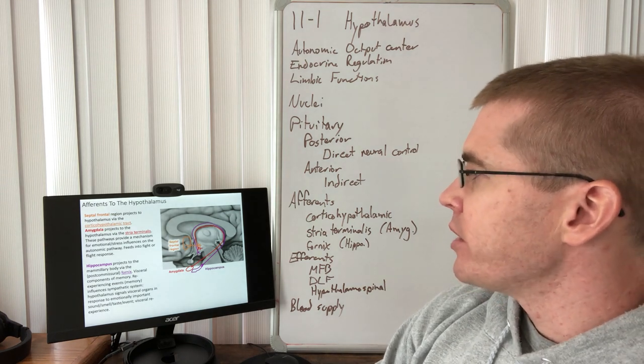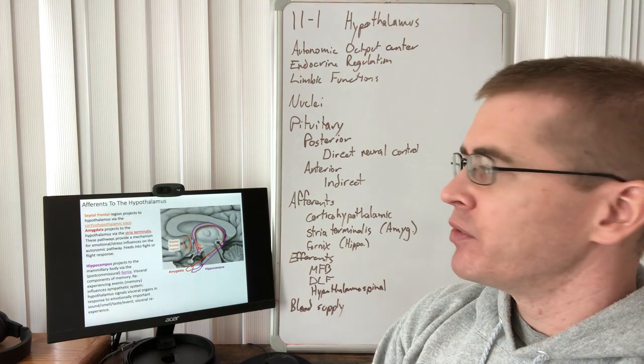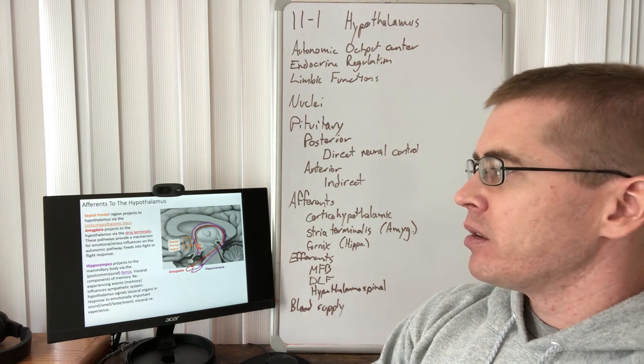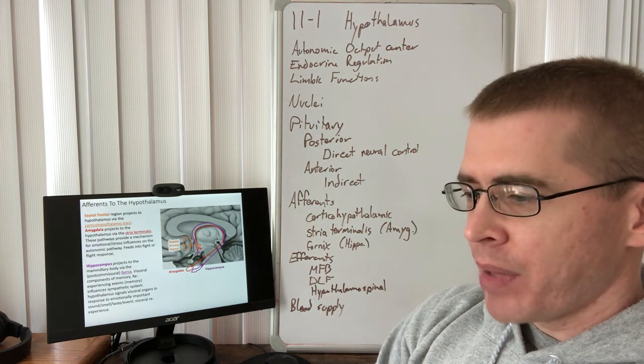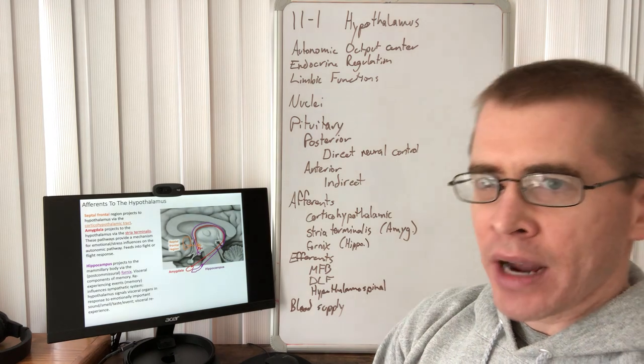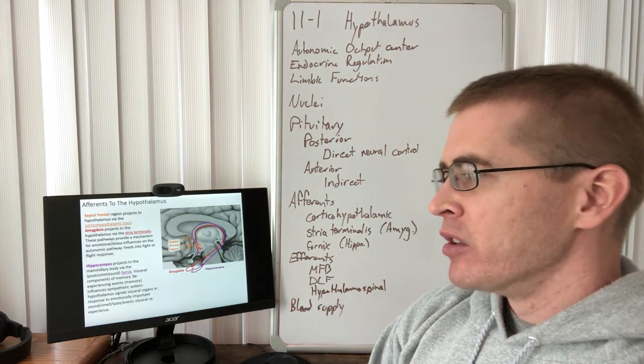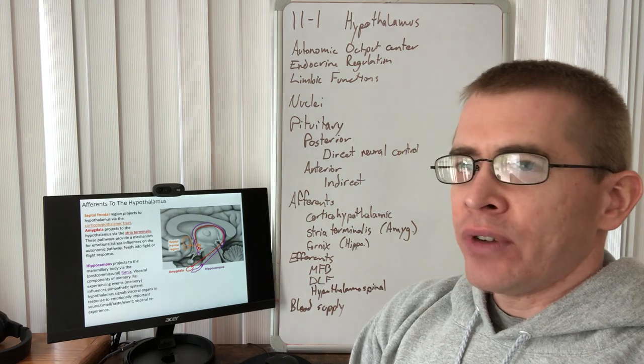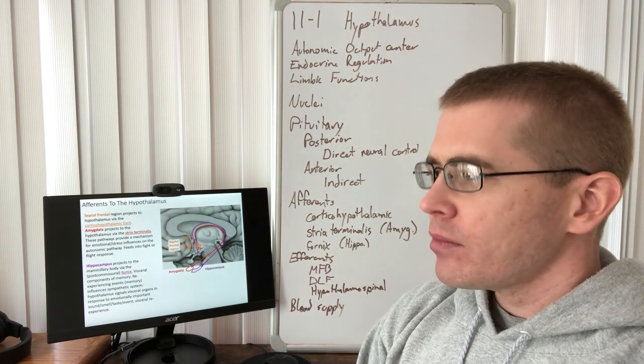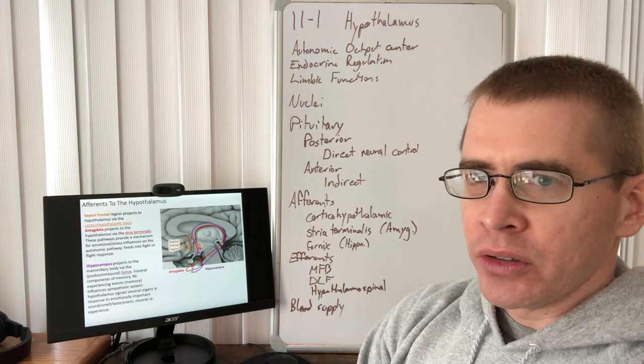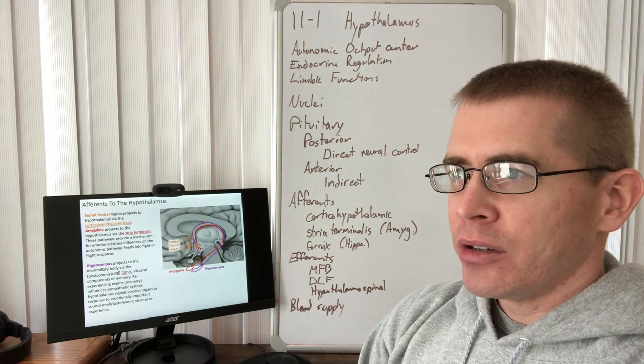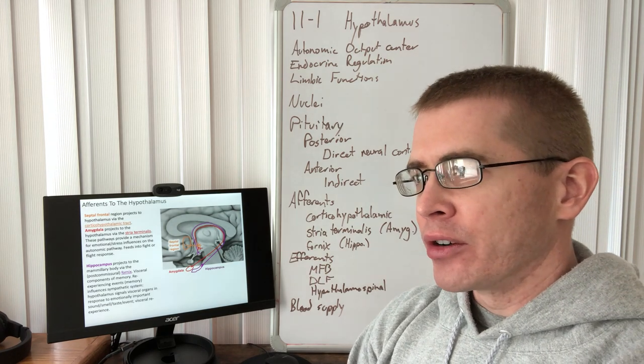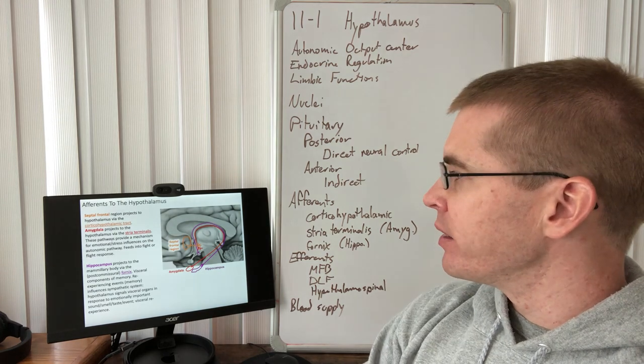Then I'll talk about the amygdala. So its projections to the hypothalamus via the stria terminalis. Regulating our autonomic reflexes based on our emotional sense of what's going on around us at any given time. So for example, the fear response is going to stimulate a fight-or-flight response from the hypothalamus and release the appropriate hormones to do that. You don't need to be spending energy digesting food if you are in a fight-or-flight fearful mode. So that's the functionality there.